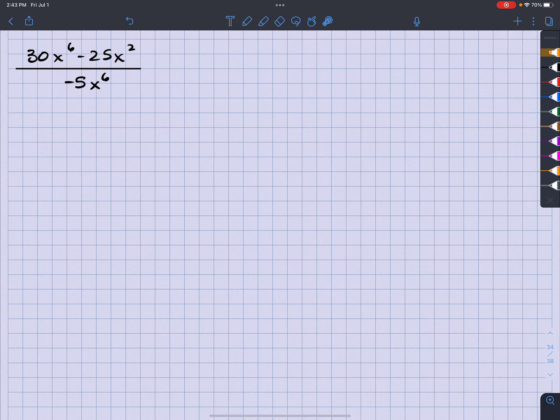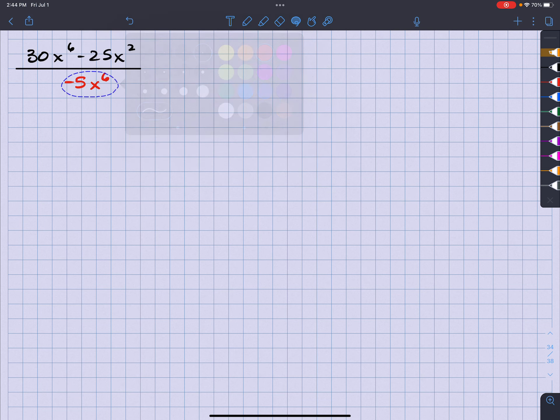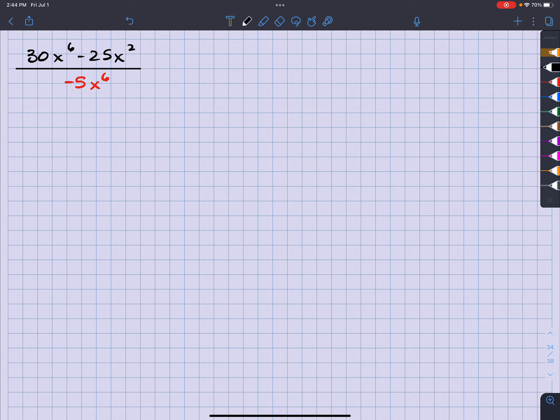With a monomial, what we do is split fractions. We're going to call this red. So we're going to split this fraction up.